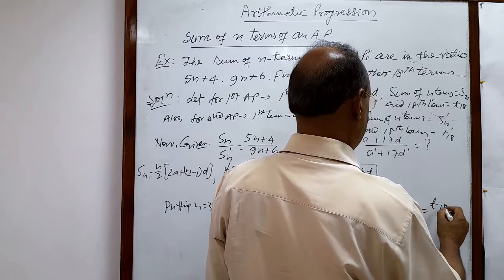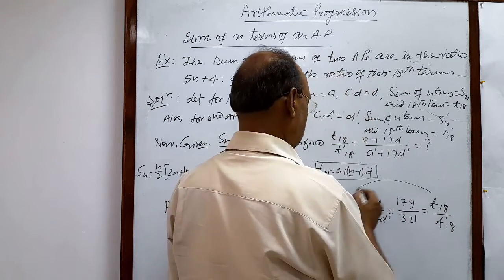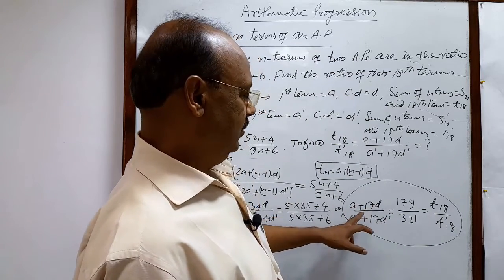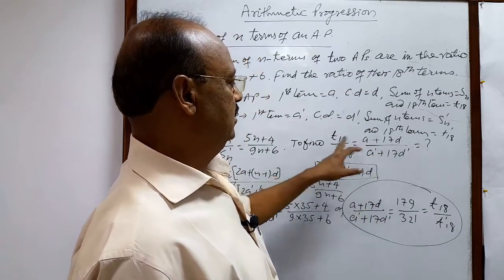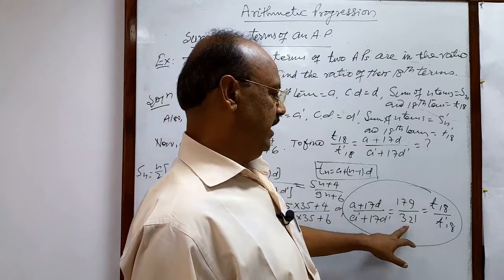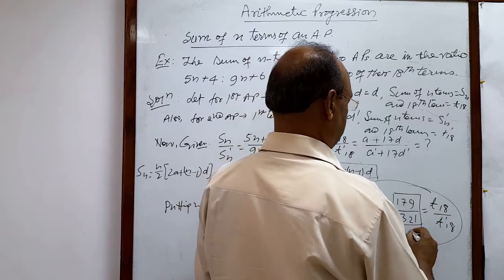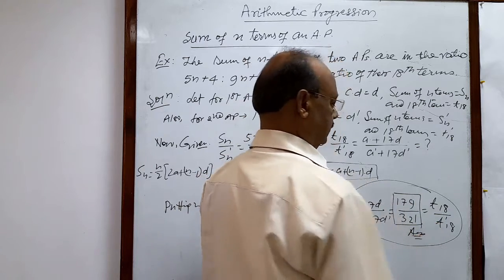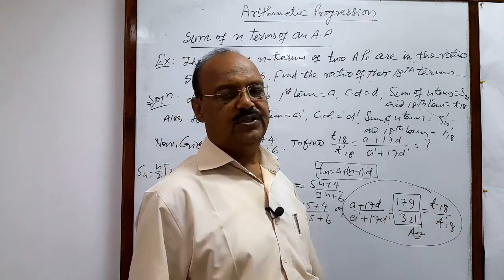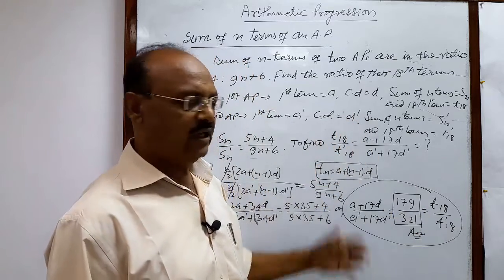This is t18 by t dashed 18, and its value is 179 by 321. So this is the ratio, this is the answer. The ratio of 18th terms of these two APs. Simple, very easily we got the answer.